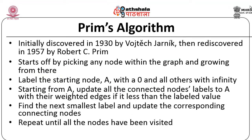Now let us go to the Prim's algorithm. It was initially discovered in 1930 by Vojtech Jarník, but it was later rediscovered in 1957 independently by Robert C. Prim. Prim is the name given to this algorithm, called the Prim's algorithm.